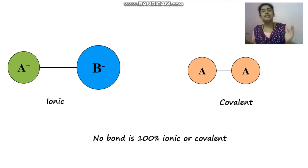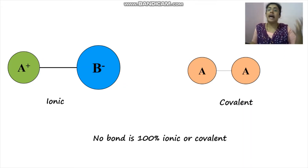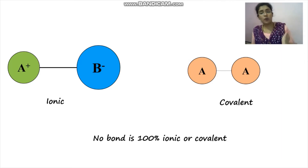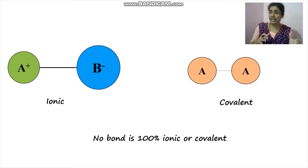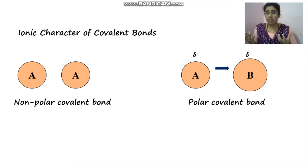In actuality, no bond is 100% ionic or 100% covalent. Every ionic compound's bond has some amount of covalent character in it, and the bond of every covalent compound has some amount of ionic character in it. Now let's look at the ionic character of a covalent bond.